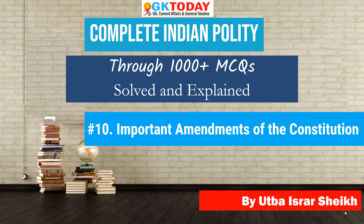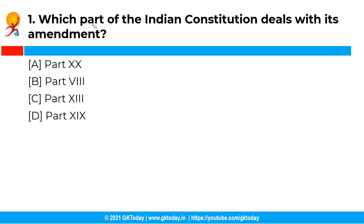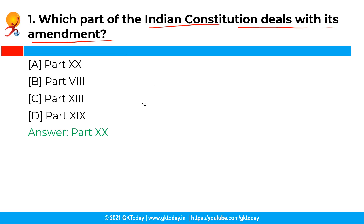Now let's start with the questions on Indian polity. The first question is: which part of the Indian Constitution deals with amendment? The correct answer is option A, that is Part 20. Part 20 of the Constitution of India has only one article, that is Article 368, which deals with the amendment of the constitution.